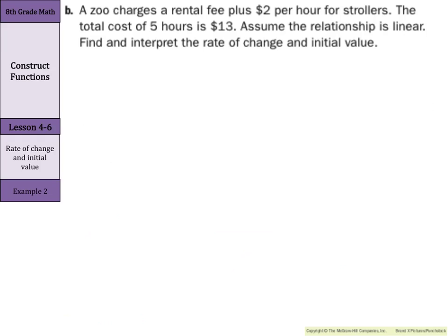A zoo charges a rental fee plus $2 per hour for strollers. The total cost of five hours is $13. Assume the relationship is linear. Find and interpret the rate of change and initial value. Now with this we're going to use the $2 per hour as an important fact. That $2 per hour is our rate of change. So for our rate of change, $2 per hour is the hourly cost.